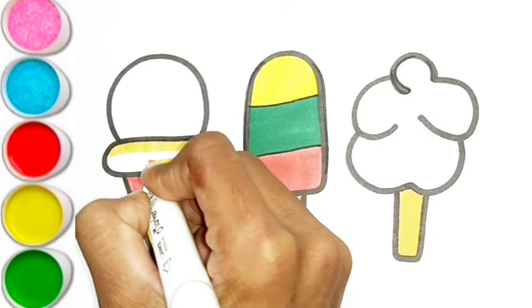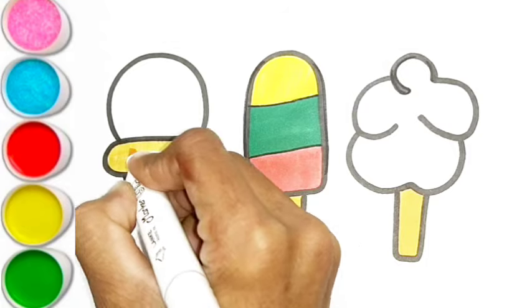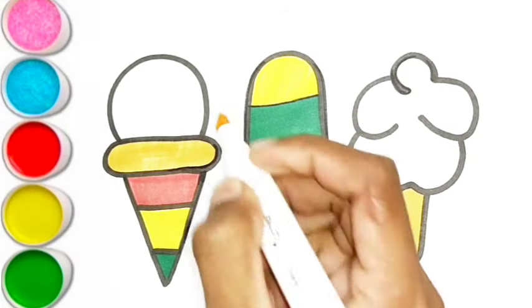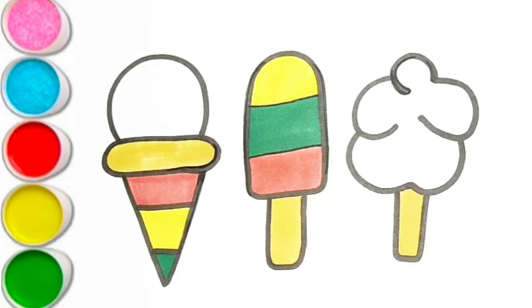Y is for yellow. Y, y, yellow. Z is for zebra. Z, z, zebra.